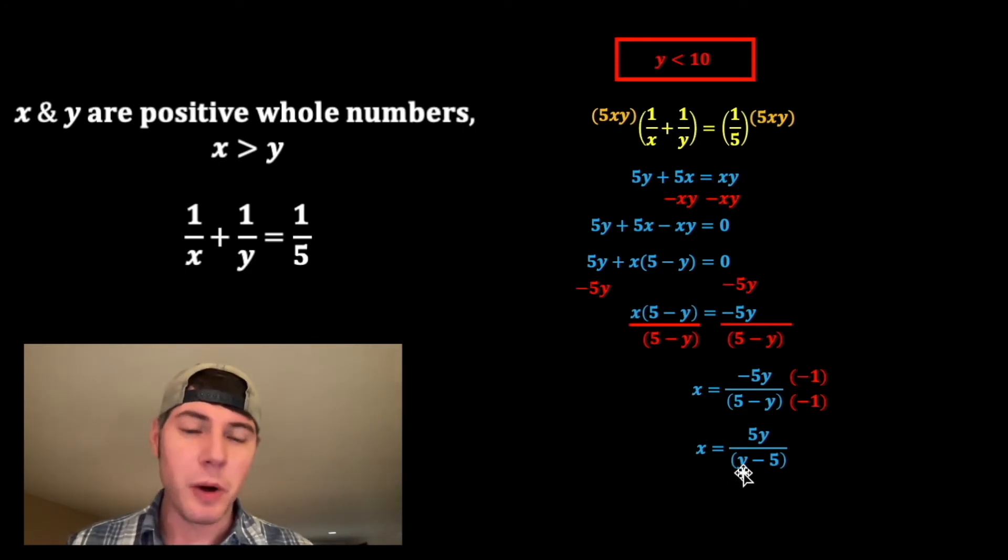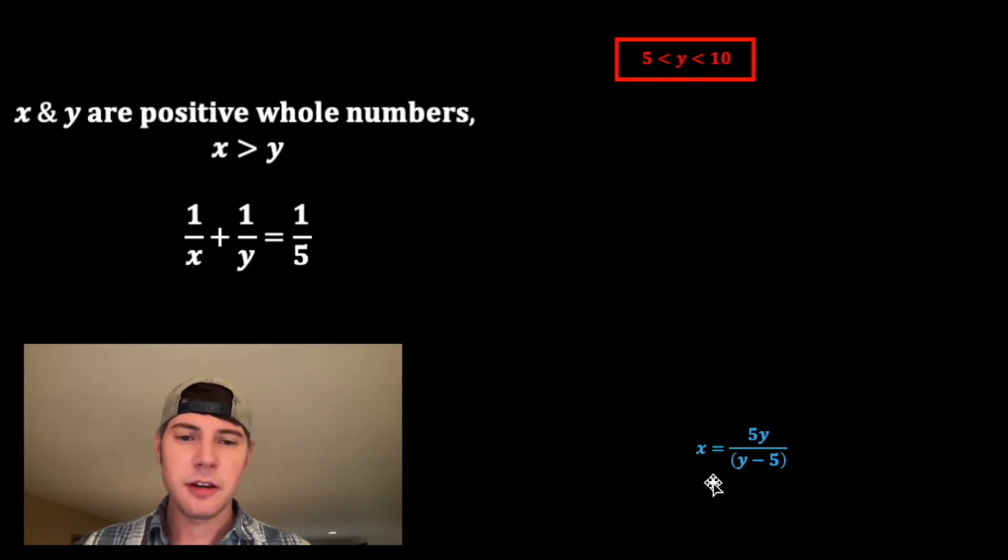In this equation here, we know y can't be 5 because we'd have division by 0. But we also know that y can't be 4 because that would make this whole thing negative. And x can't be negative. X is supposed to be positive. So y can't be anything less than 5, and it can't be 5. So we have to say y is greater than 5. And we can flip that to be 5 is less than y, and we can bring that up here. So we have 5 is less than y is less than 10.